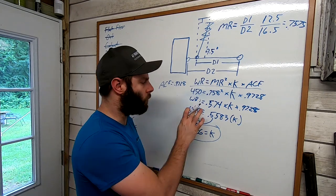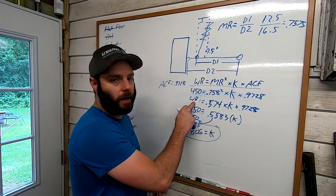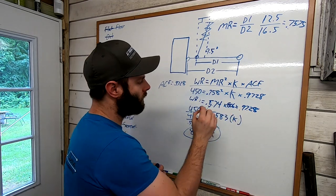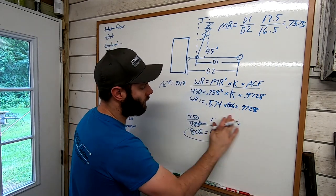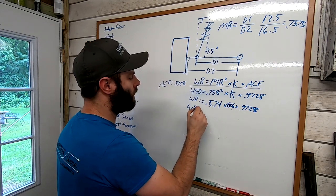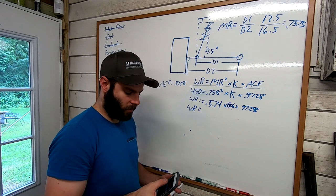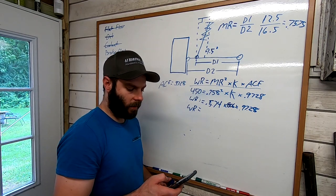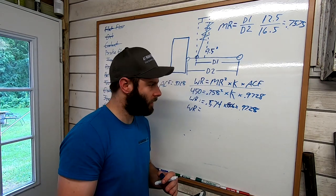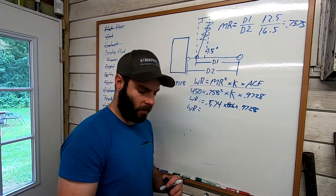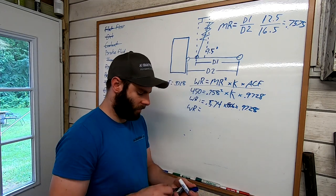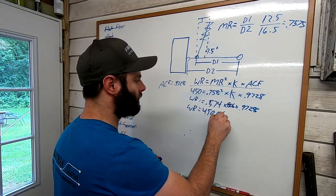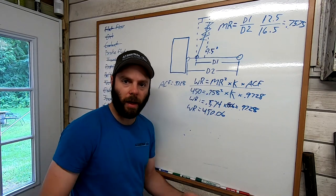So now to check it, we know we want about an 806. So if we do our math, wheel rate equals 0.574 times 806, about 462.6 times 0.9728 equals, look at that, 450.06. So you can always double check your math that way as well.